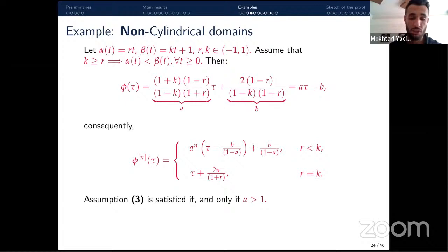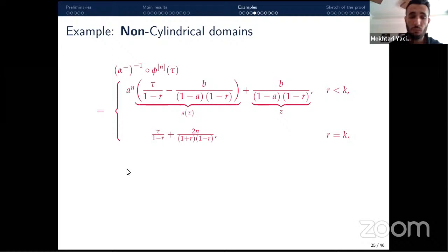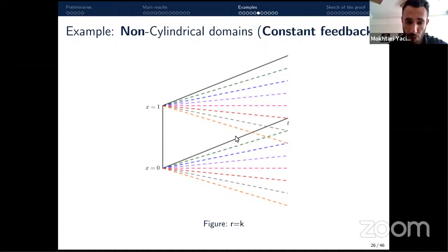For assumption 3 to be satisfied (the iterate sequence must be increasing and tend to infinity), we need a > 1. The figures show the characteristic lines in both cases: the parallel case (r = k) and the non-parallel case (r < k). In the simplest non-cylindrical case, if the feedback function f is a nonzero constant (f ≠ −1, 1), then cₙ is just the product of capital F to the power n+1, and the growth bound is ω = 0.